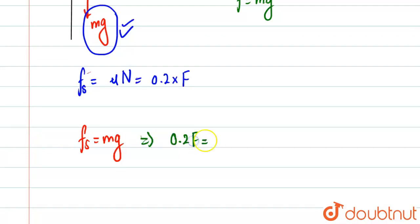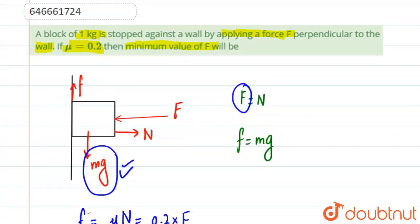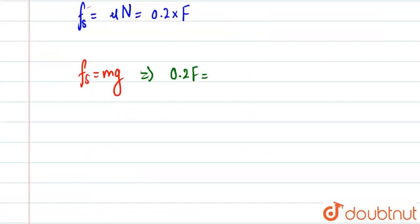0.2F must be equal to M. If you see the mass of the block, the mass of the block is given 1 kg, and G we normally take it as 10. So 1 into 10. So if you see over here, F will come out to be 10 by 0.2, so this will come out to be nothing but 50 Newton.